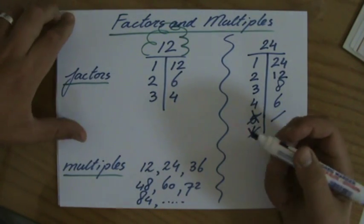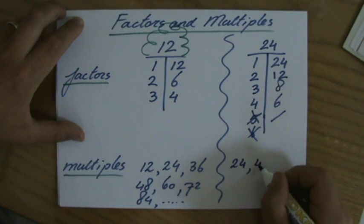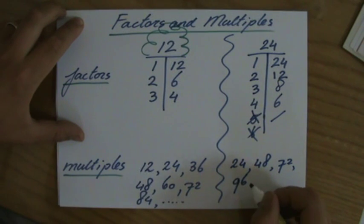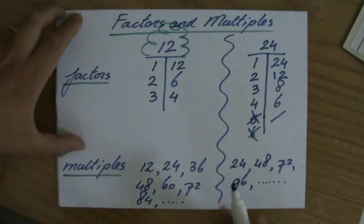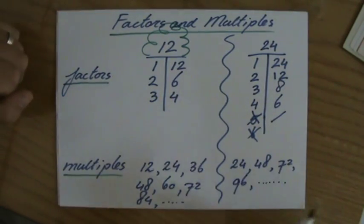And what are the multiples of 24? 24, well, the timetable, 24, 48, 72, 96, and you can go on and on and on. 1 times 24, 2 times 24, 3 times, 4 times, 5 times, 6 times, 7 times, 20 times 24, those are the multiples.